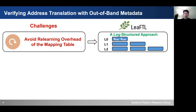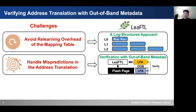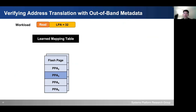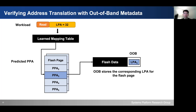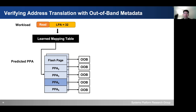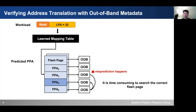Next, I'll talk about how we gracefully handle mispredictions in address translation. On the SSD, each flash page is attached with an out-of-band (OOB) metadata area, which contains the logical address of its physical flash page. During address translation, the learned mapping table predicts the corresponding physical address of the logical address and loads the predicted flash page to its DRAM buffer. By comparing the logical address stored in the OOB metadata with the requested LPA, we can verify the correctness of the address translation. However, if a misprediction happens, we have to search through neighbor flash pages until we find the correct one, which is time consuming as it incurs multiple extra flash read requests.